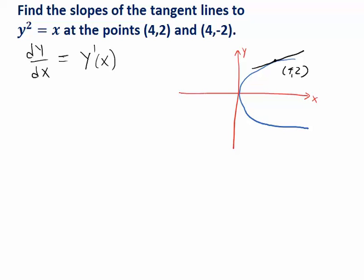A top half, y equals square root of x. And a bottom half, y equals negative square root of x. But we don't actually have to do that if we use our technique of implicit differentiation.